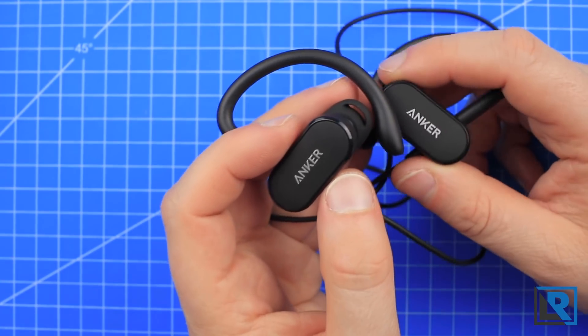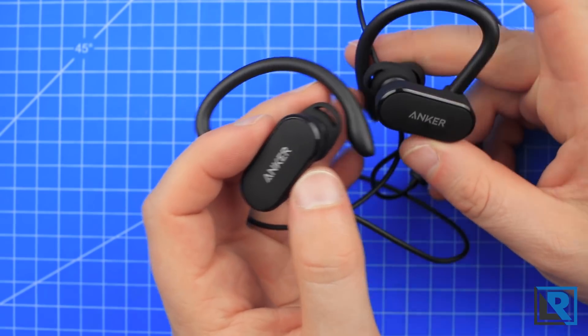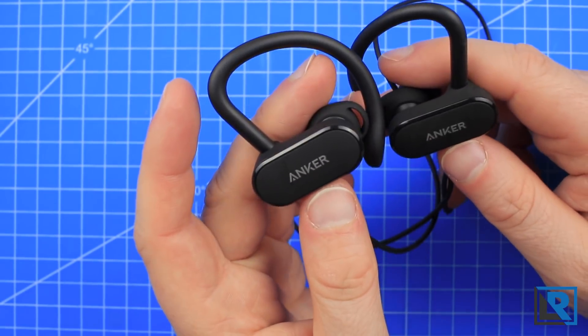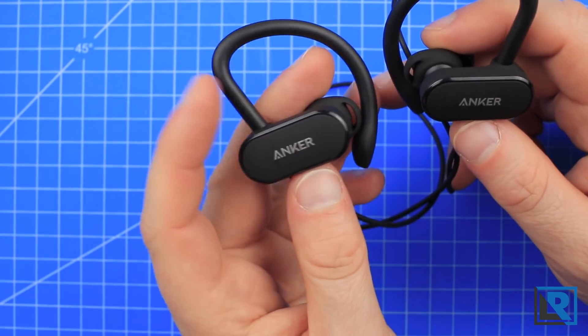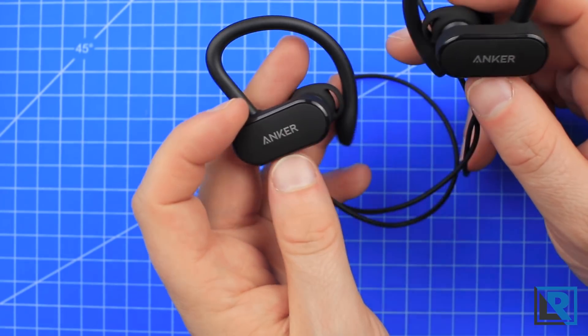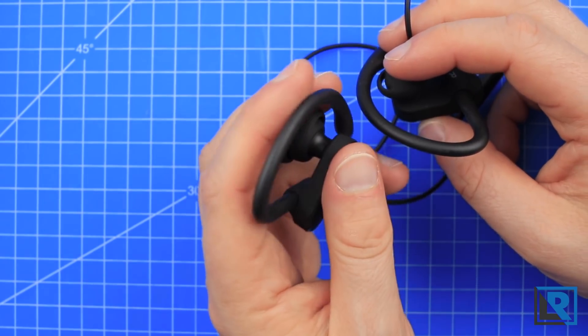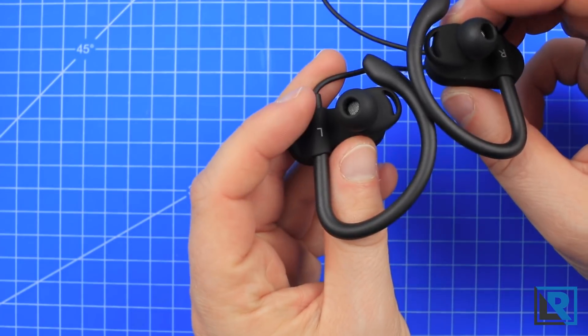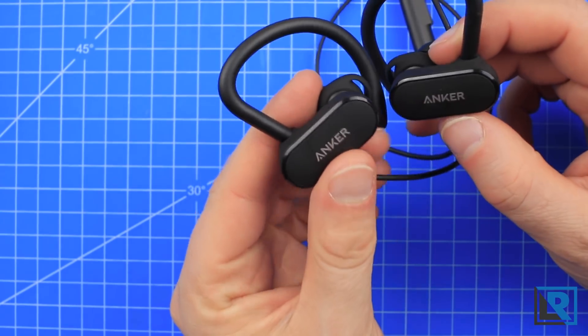The SoundBud Curves has CVC noise cancellation technology. And an important thing to note about that is it's for phone calls only. These are not a replacement for your Bose noise cancelling headphones that you use on mass transit or airplanes. This noise cancelling technology only works on phone calls, not music playback.